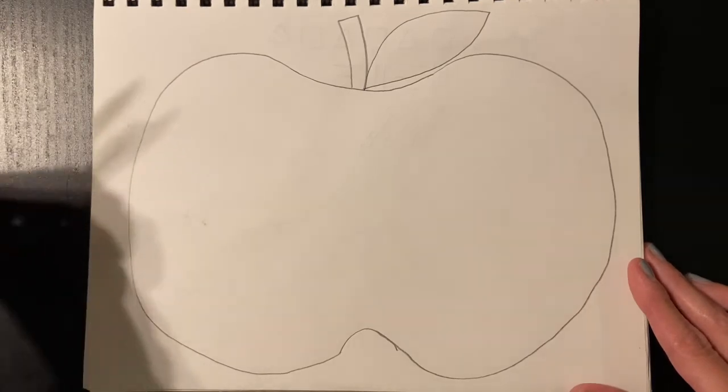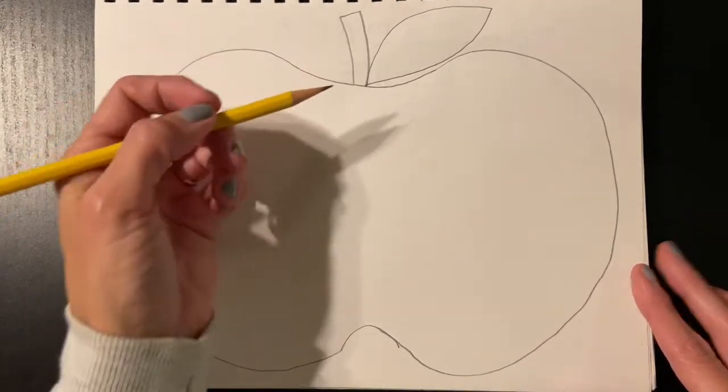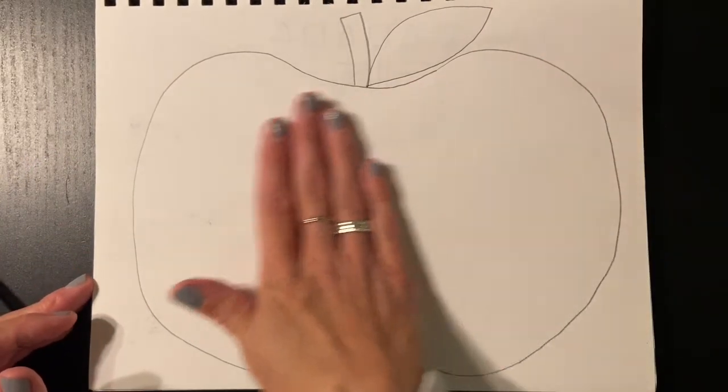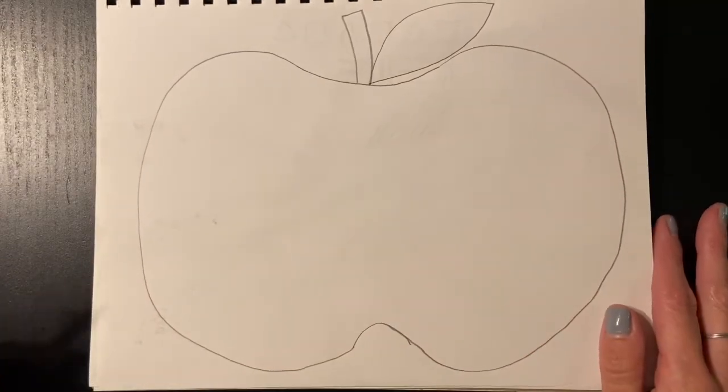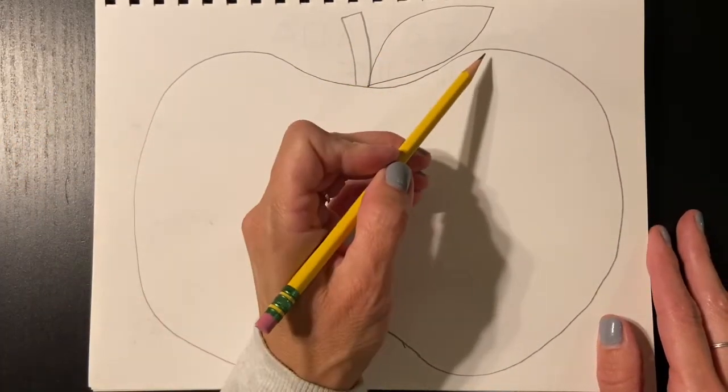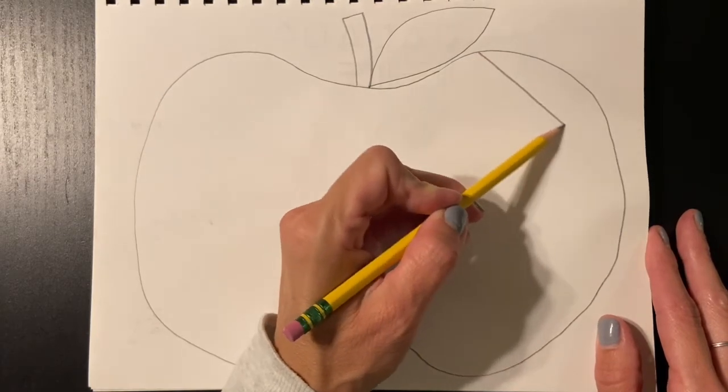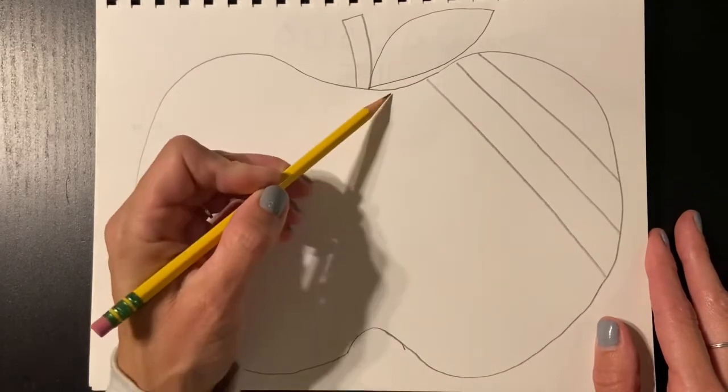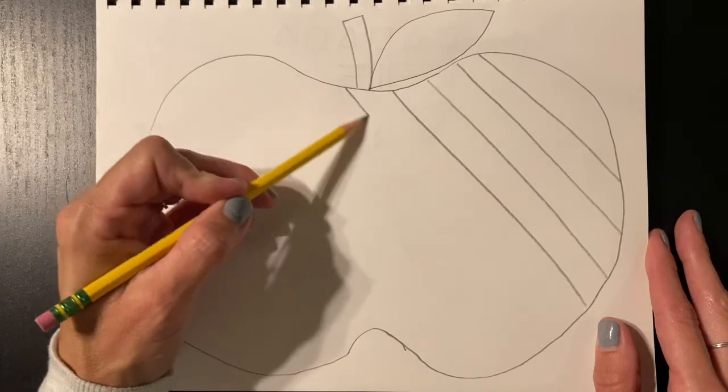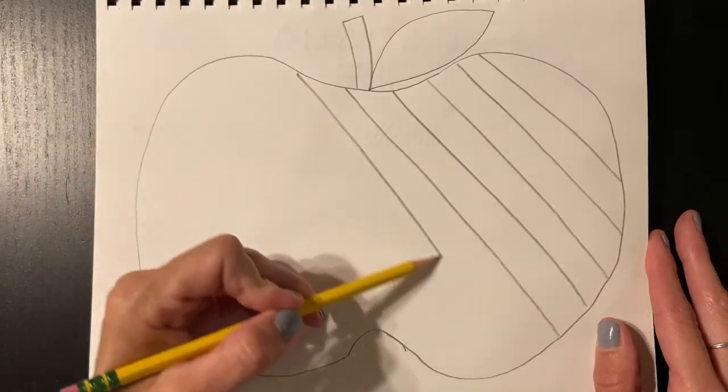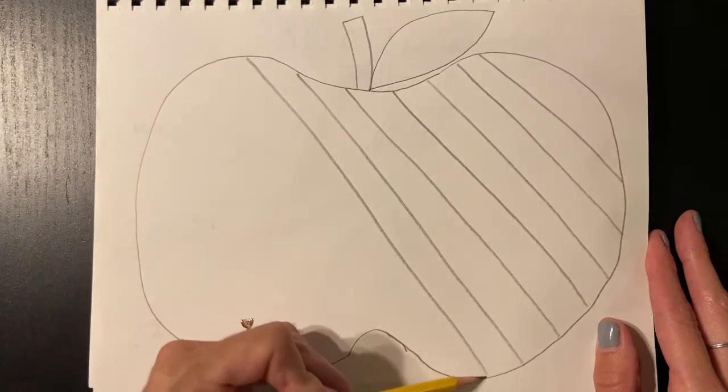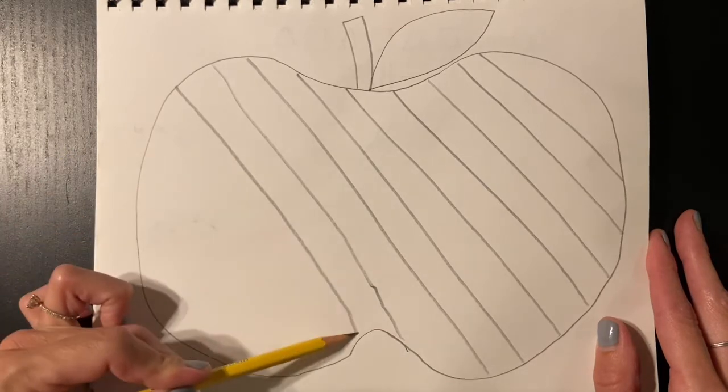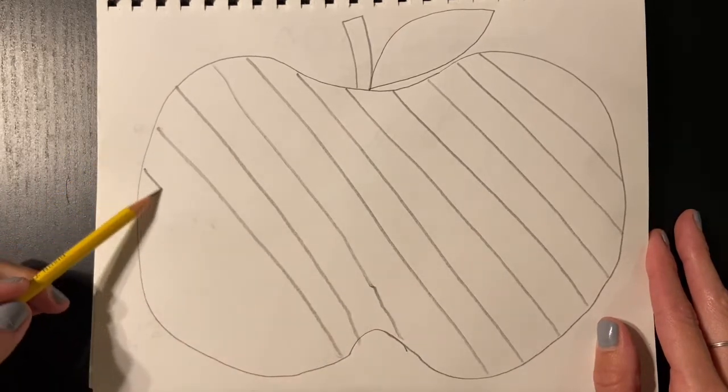Inside the apple, I want you to come up with some kind of pattern. You can do more than one kind of pattern, or you can just do one pattern across the whole apple—that's up to you. I'm going to keep mine kind of simple. I'm going to do some diagonals all the way across my whole apple.